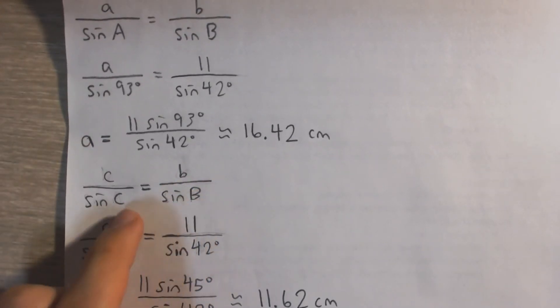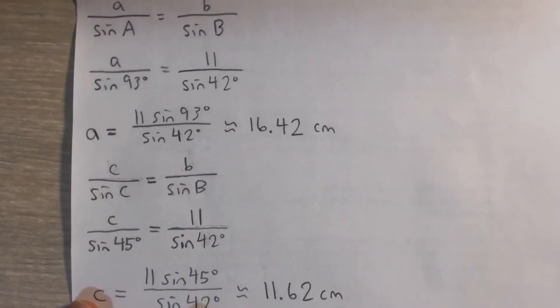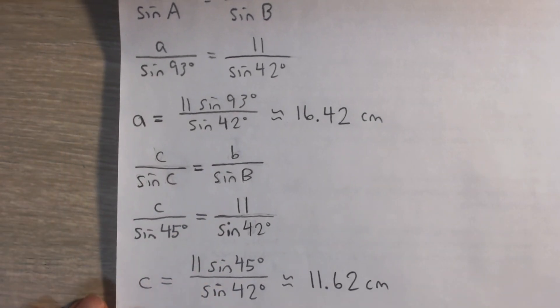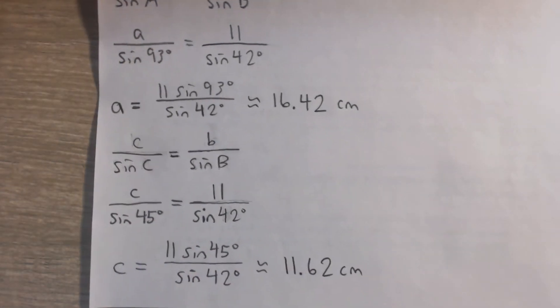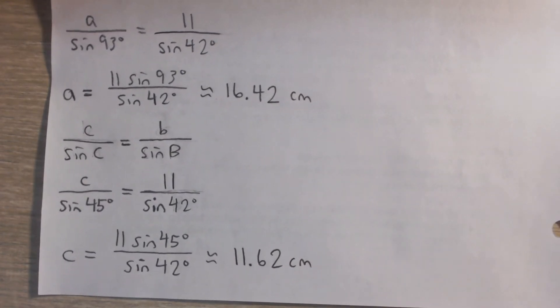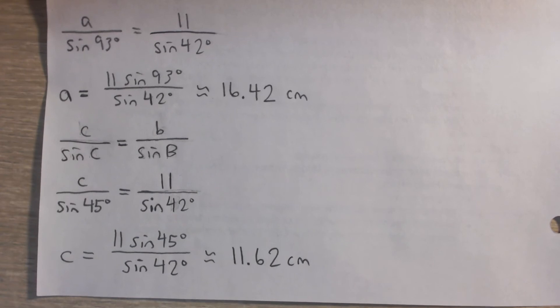We know lowercase b, capital B, and capital C. We calculated capital C in this question. So we can plug those in and solve for lowercase c. And so we get, multiply both sides by sin 45.